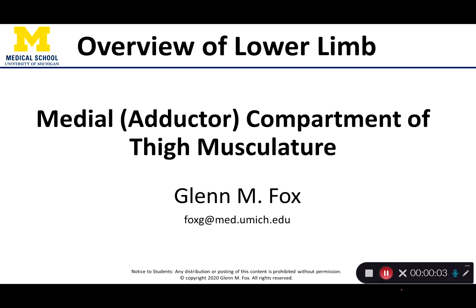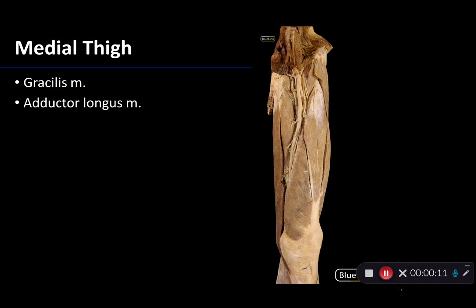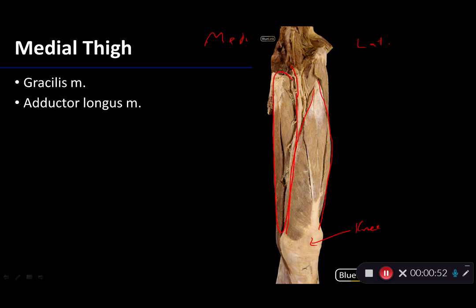Let's talk about the muscles of the medial compartment of the thigh, or the thigh adductor compartment. What we're looking at here is the proximal portion of the upper limb — let's orient ourselves. Here is lateral and here is medial. I can tell that because here is the quadriceps group, then there's the knee, and there's the external iliac artery going into the femoral artery. So we're really focusing on this region.